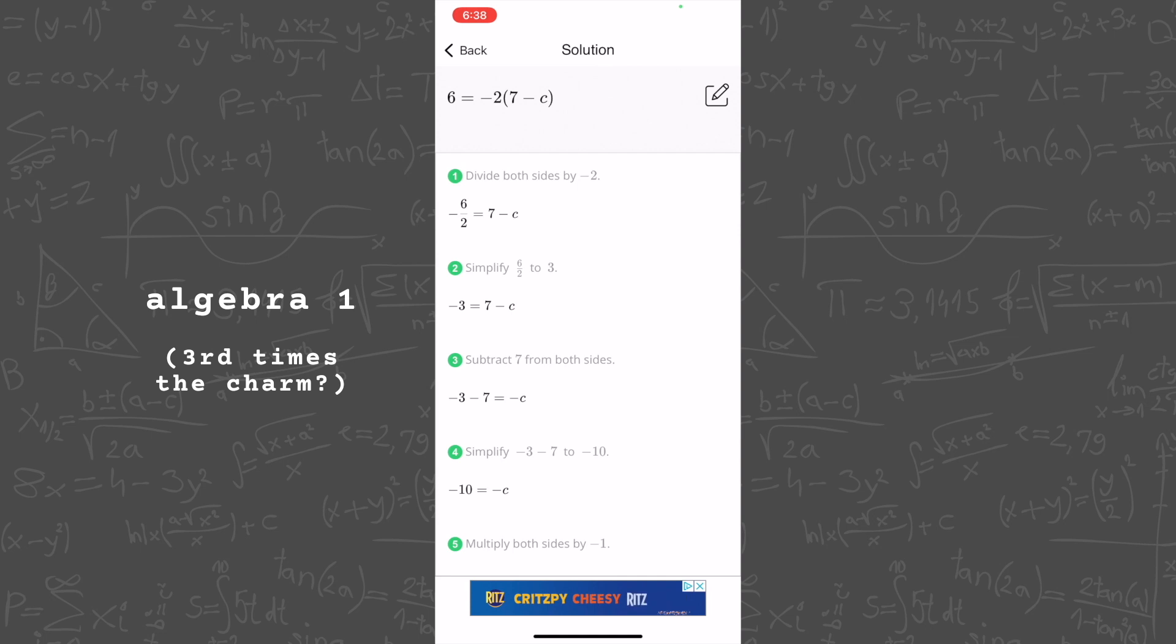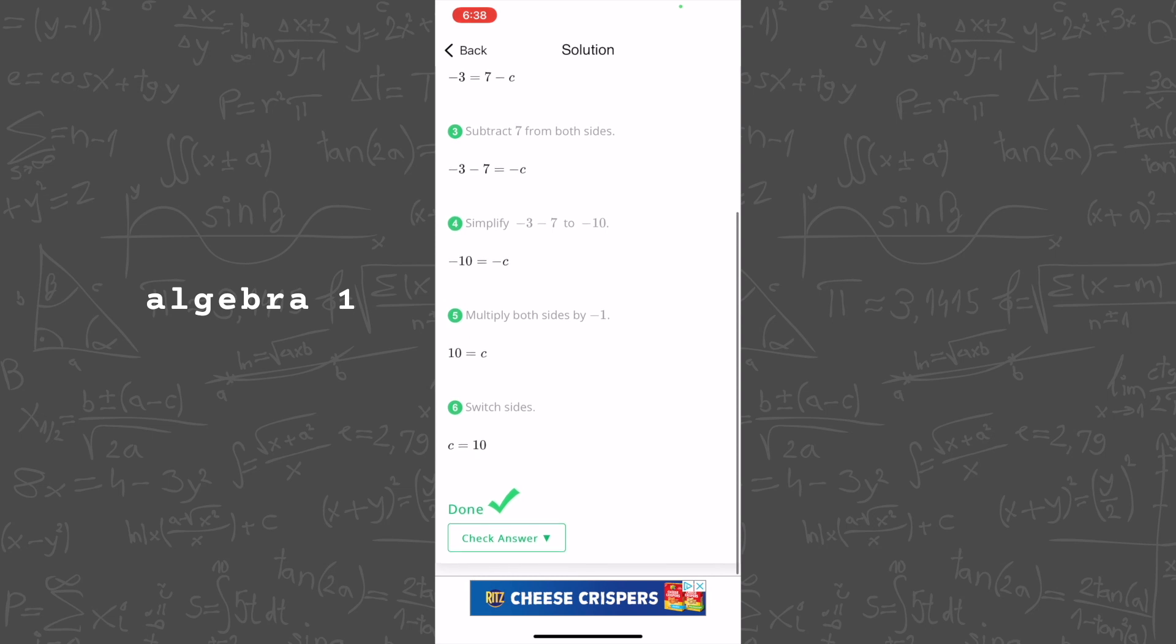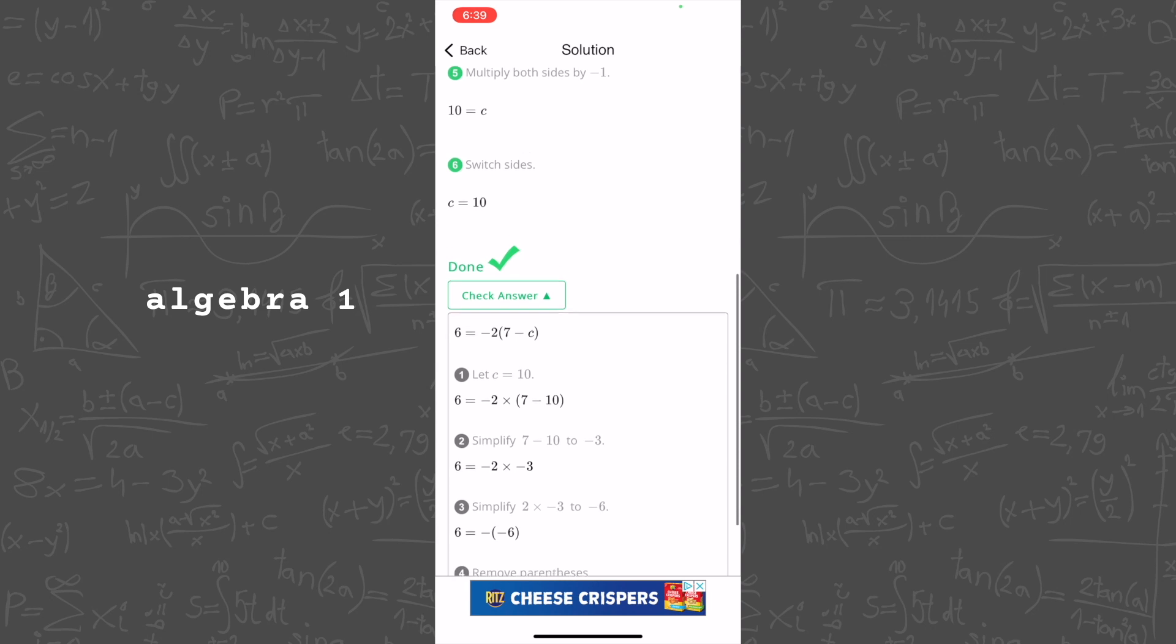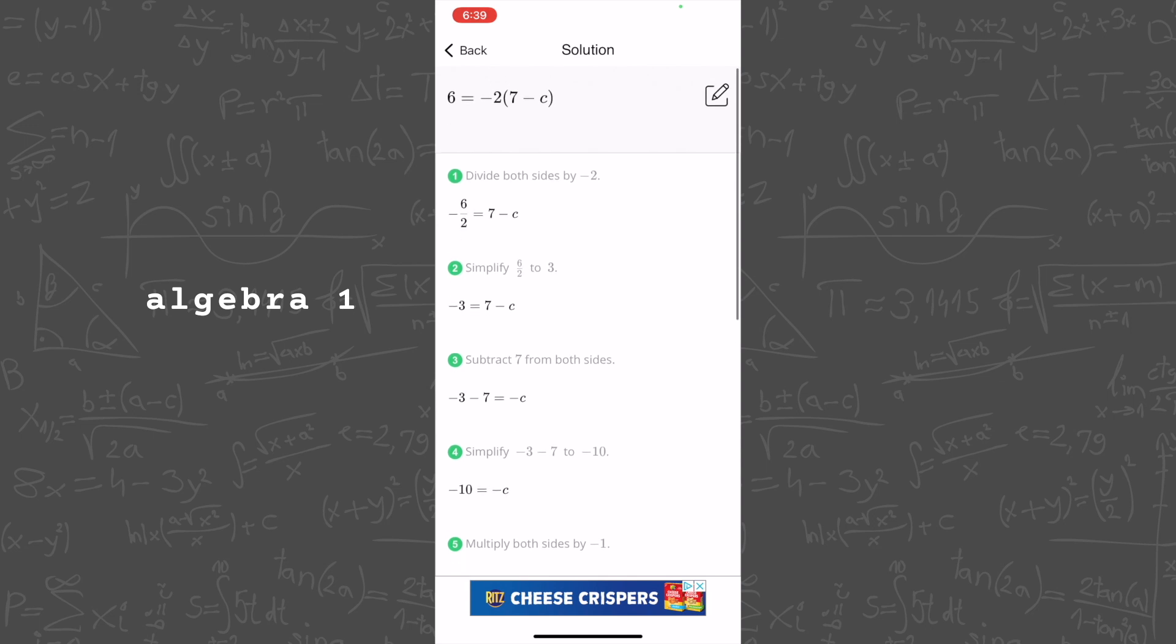When it finally did pick up the problem, Scimath solved it super quickly, and I really liked the level of detail it gave in the solution. Sometimes in other apps, it can look messy between the equations and the explanations, but I think the UI here looks really clean and color-coded, and it explained how I can check my answer, which is something I've never seen in another app before, so bonus points for that.